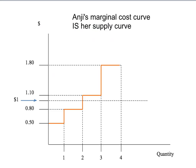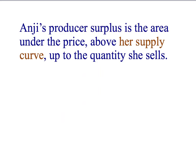In the last presentation, we saw that Anji's marginal cost curve was actually the same as her supply curve. So we've got Anji's supply curve, and we know that Anji's producer surplus is the area under the price, above her supply curve, up to the quantity that she sells.